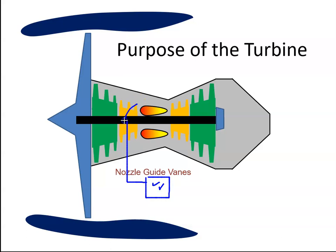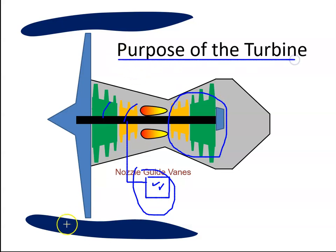So the compressors, the accessories, the fan or the prop - they're all driven by the turbine blades. So that's their purpose, to drive all of those.